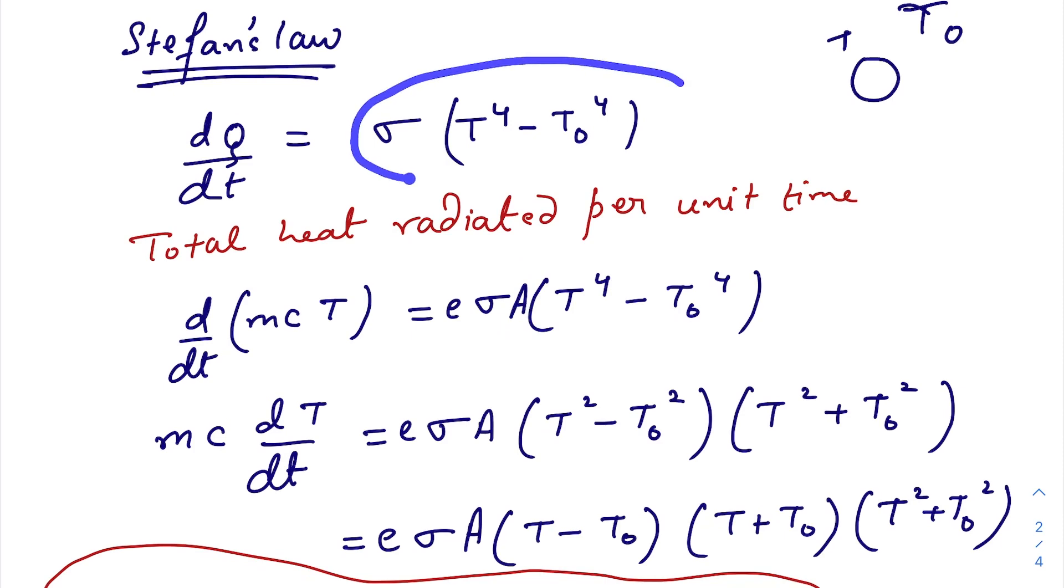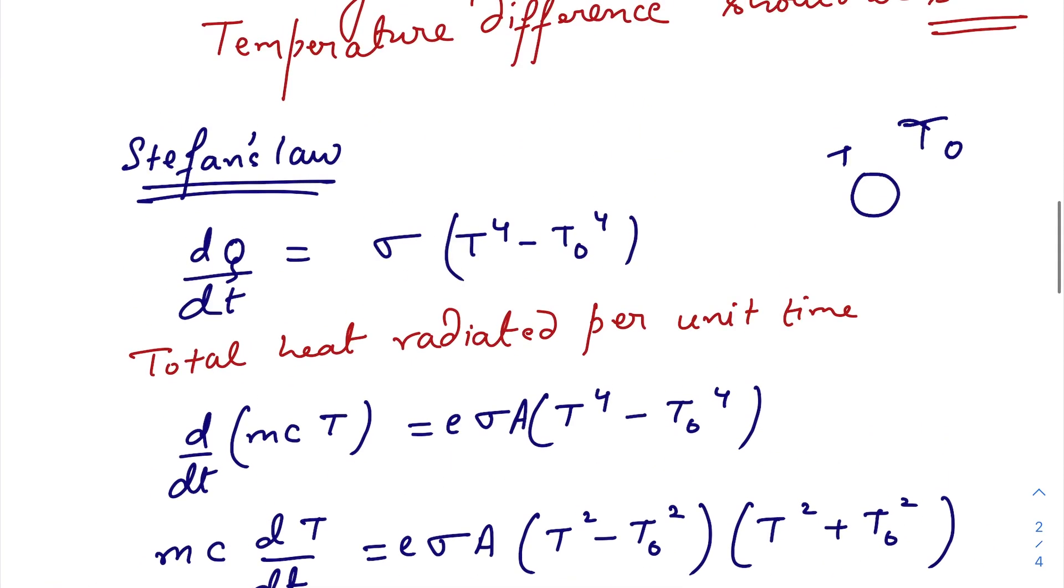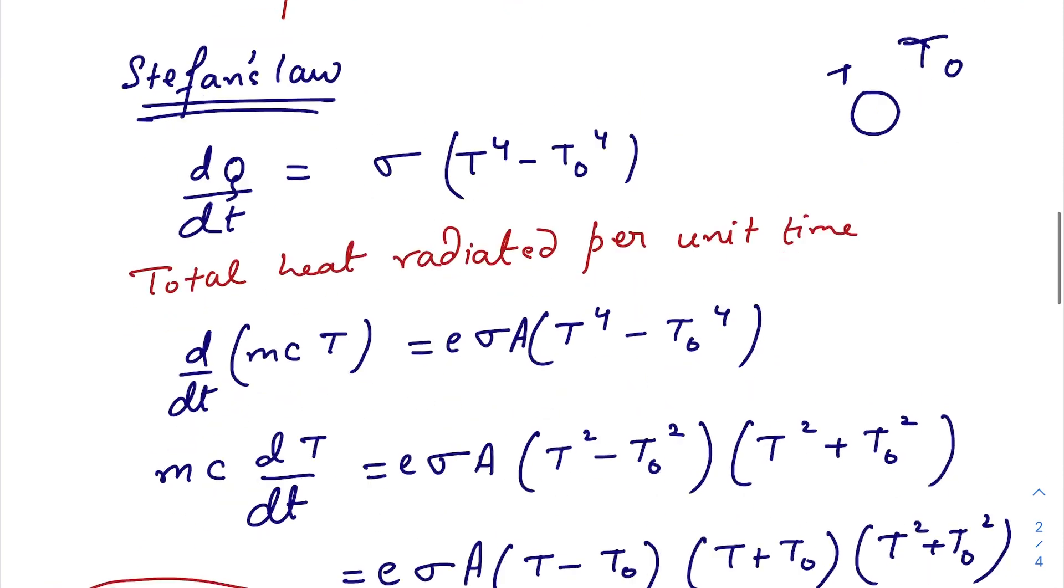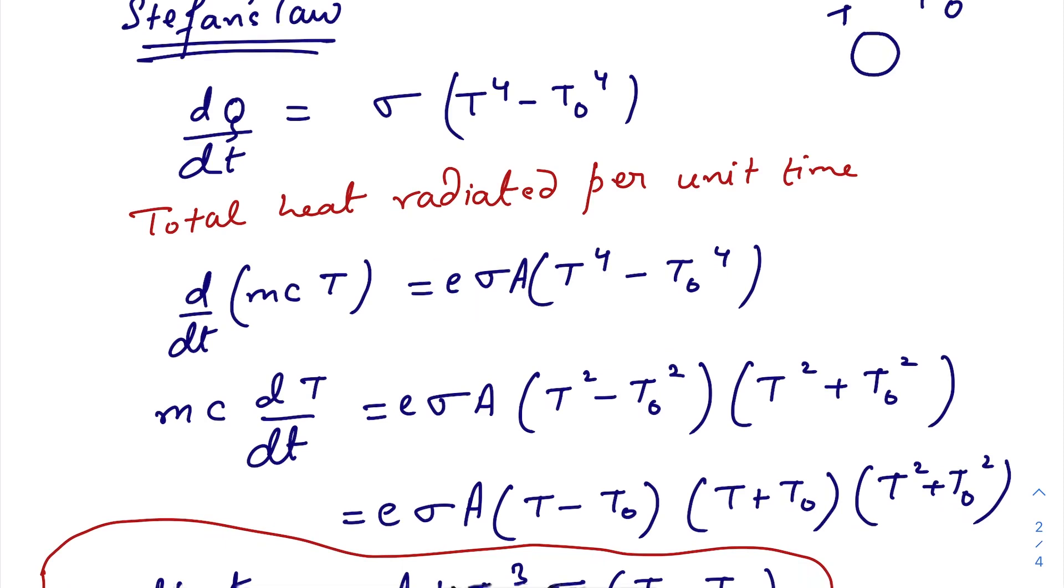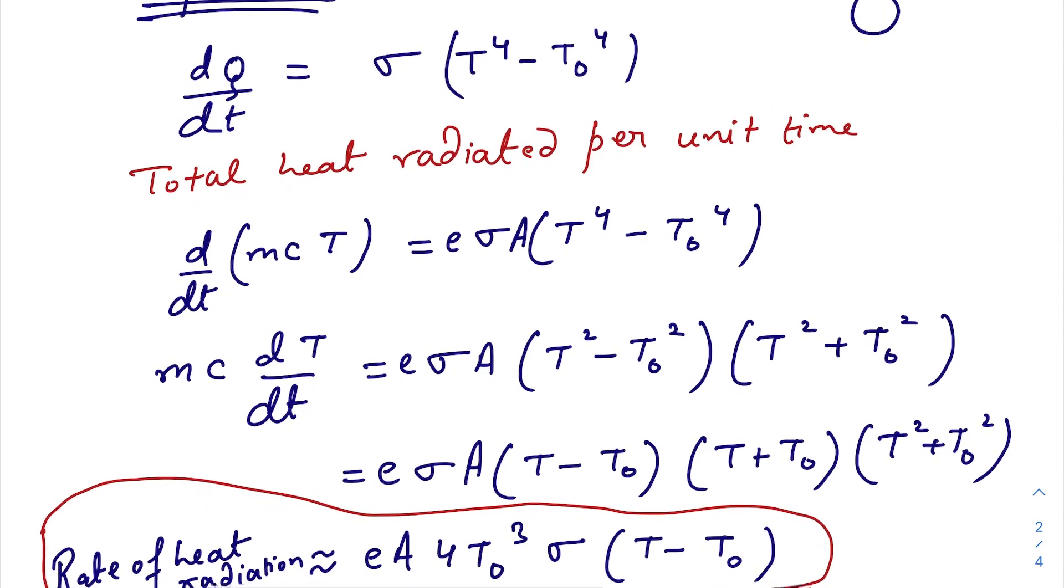This thing represents energy radiated per unit area per unit time normally. For the whole area you should multiply with A. This is the radiation per unit time. E gives you an idea of how much of the energy being emitted, fraction of the energy being emitted.